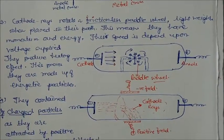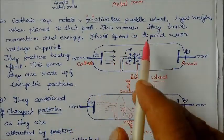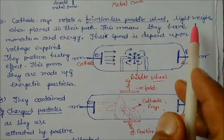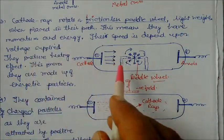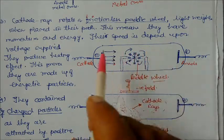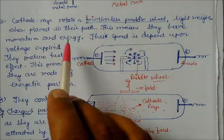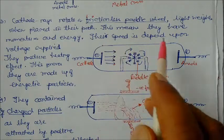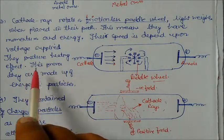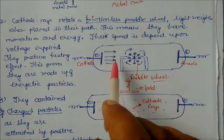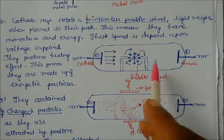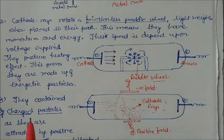Third, cathode rays rotate a frictionless paddle wheel. When cathode rays fall on the paddle wheel, it rotates — this means cathode rays have momentum and kinetic energy. The kinetic energy depends upon the voltage applied: maximum voltage gives maximum kinetic energy. They also produce a heating effect because cathode rays are made up of energetic particles.